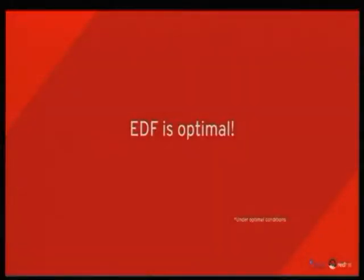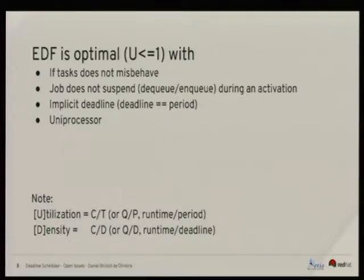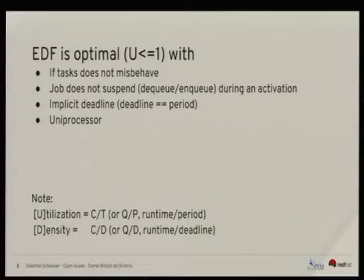Why use a deadline scheduler with those harder-to-define parameters rather than fixed priority? Because EDF is optimal — for a single processor, under optimal conditions. It means that on a single-processor system, when jobs don't suspend and have deadline equal to the period, I can fill the CPU to 100% running SCHED_DEADLINE tasks without missing deadlines. That's not the case for the fixed priority scheduler. So EDF dominates fixed priority, and that's the main reason to care about it.